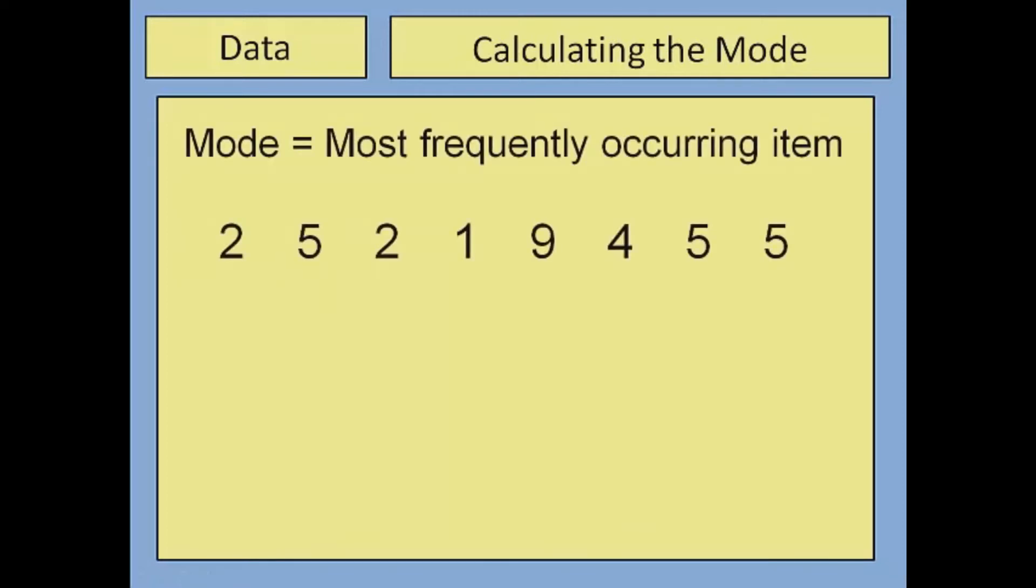The mode specifically is the most frequently occurring item. I've used the word item there rather than number because very often you can get a mode which is the most frequently occurring thing.